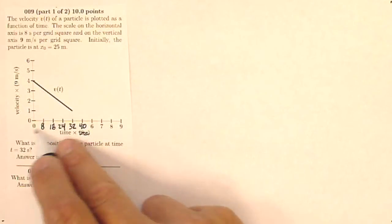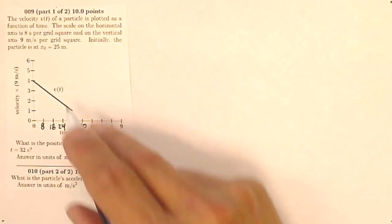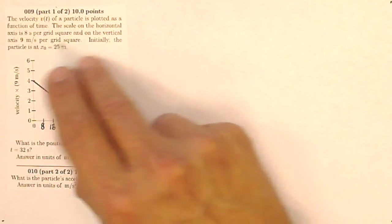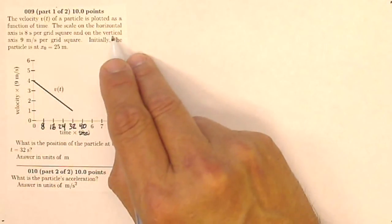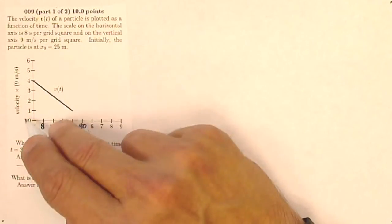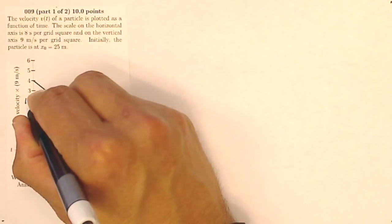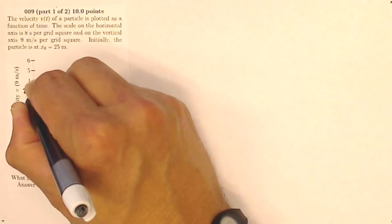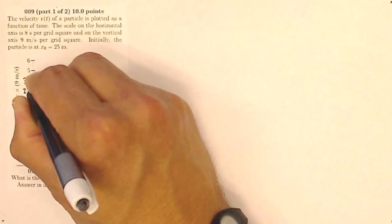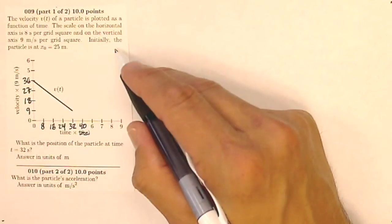So you can see that this time times 8 seconds really just changes that scale. That's how it randomized the problems for you guys. So now I've got 8, 16, 24, 32, 40 seconds. It also says that on the vertical axis I've got 9 meters per second per grid square. So this isn't 1, 2, 3, 4, 5 for me, this is times 9. So this is going to be 9, 18, 27, 36, and so on. So now that I've got my scales right, I'm ready to go further on the problem.